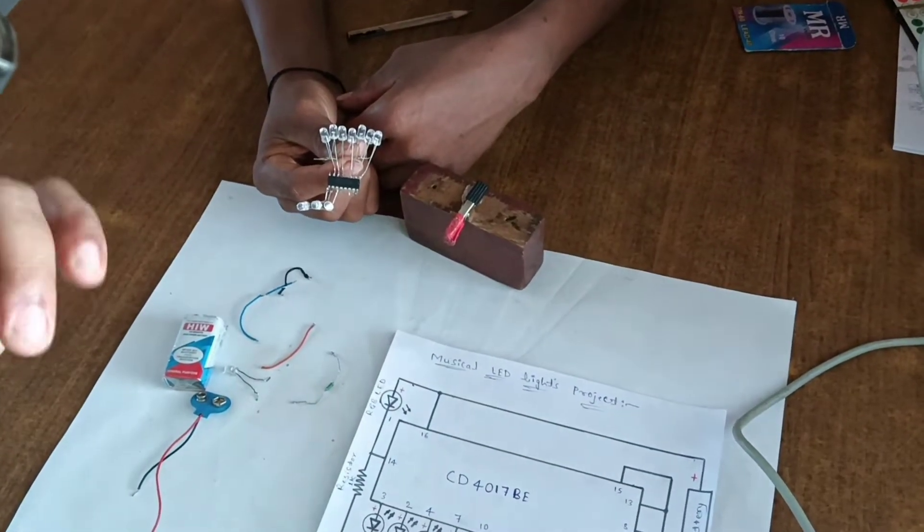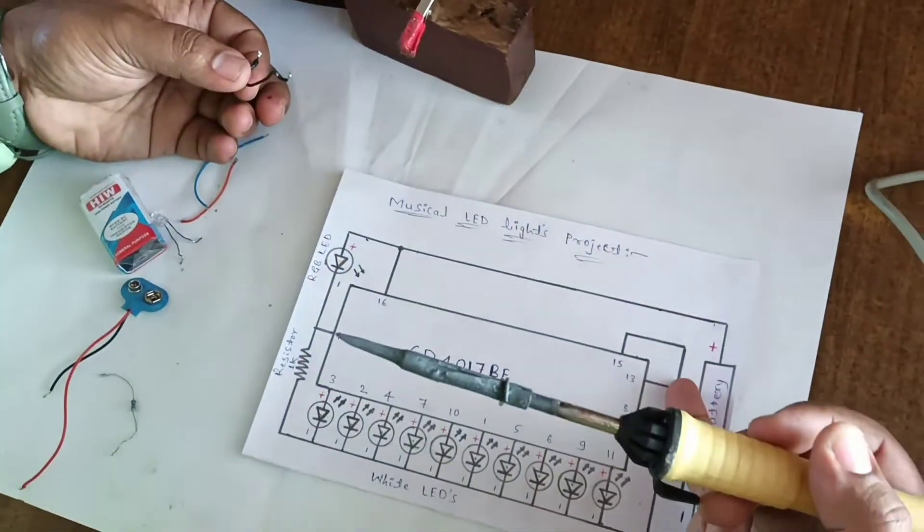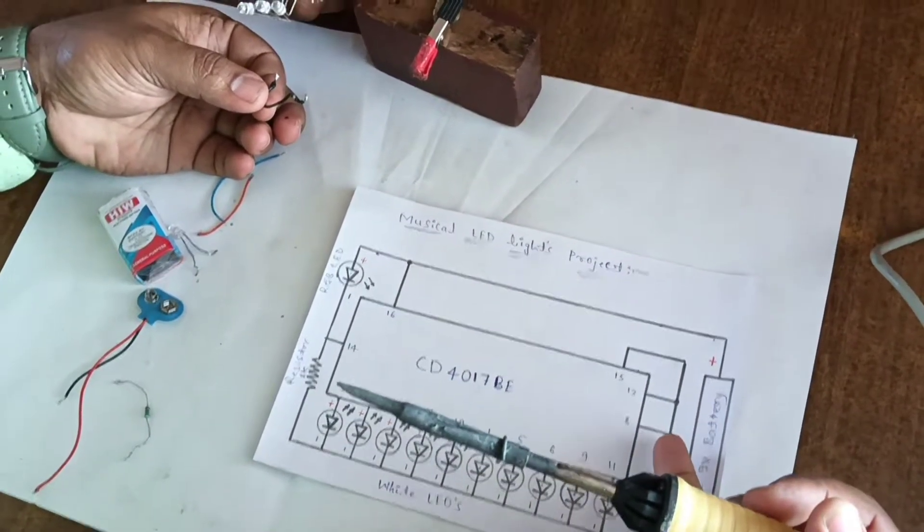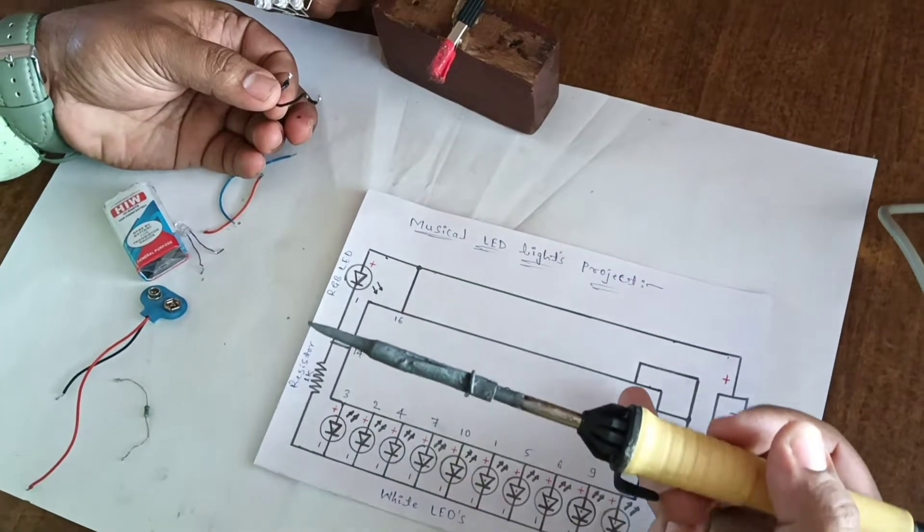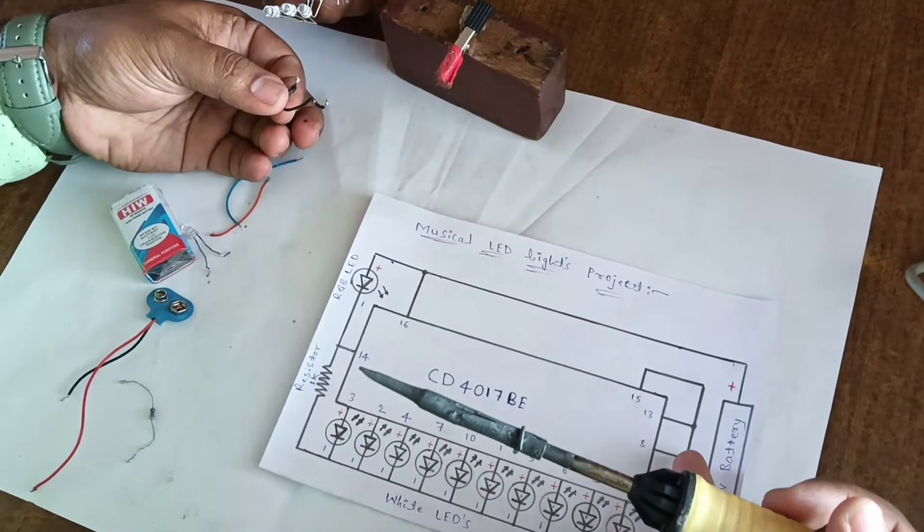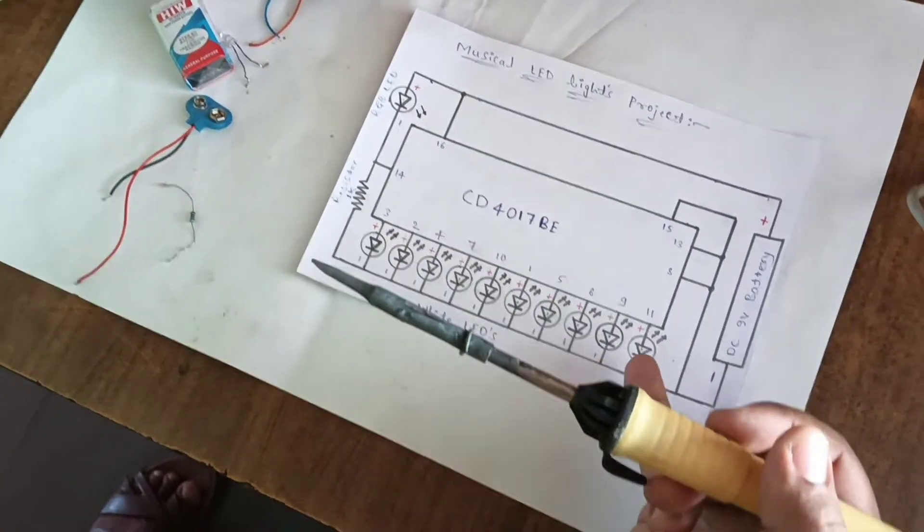Now start the connection. Pin number 13, 15 and 8. These three terminals are shorted and from that we connect to negative of the LEDs.